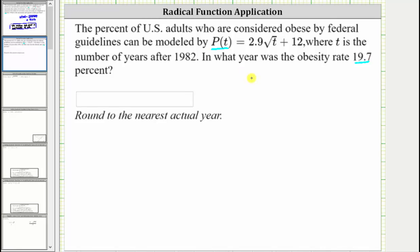So beginning with the given function, we have P(t) = 2.9√t + 12. And now we substitute 19.7 for P(t), giving us 19.7 = 2.9√t + 12.